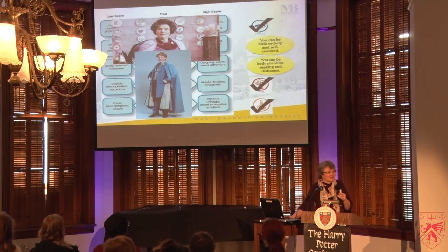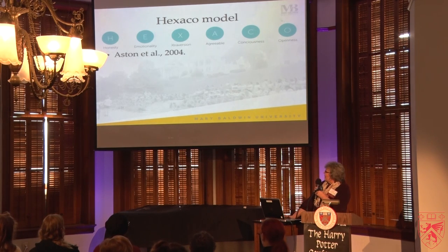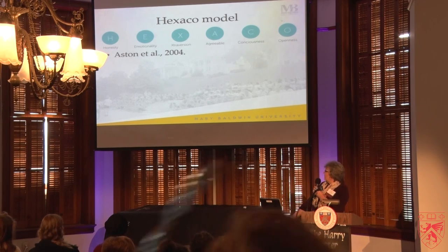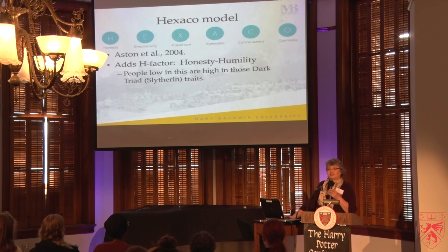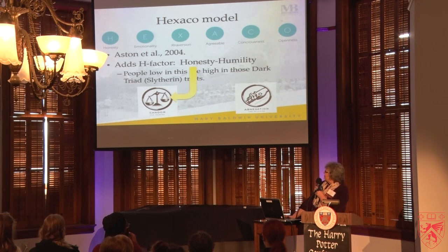A number of years ago, in 2004, a group suggested expanding the five-factor model to a six-factor model by adding an H-factor: honesty and humility. People who score high on honesty and humility are actually low on those dark triad — those Slytherin — traits. I think what Roth did is she took the honesty aspect and put it into Candor, and put the humility aspect into Abnegation. That's the personality model she set up the faction system on, and I think that's why it worked so well as a series, particularly in the first two books when the faction system was the real focus.